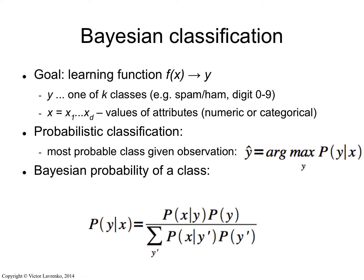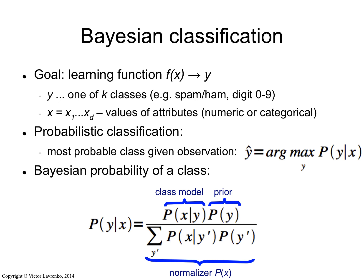These parts have names. This part — the probability of a class independently of the email I see — is called the prior. This part is the class model: assuming the email is spam, how likely am I to see a particular set of words occurring? Or assuming the digit is a 3, how likely am I to see certain pixels turned on? And then this denominator is a normalizer. We'll talk about what each of these means on the next slide.